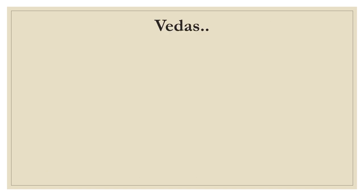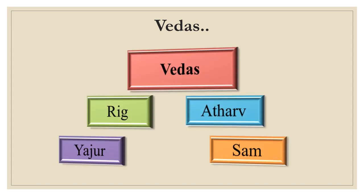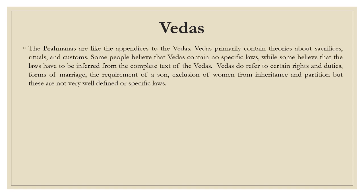There are four types of Vedas: the first one is Rik, second is Atharved, third is Yajurved and fourth is Samved. The Brahmanas are basically like an appendix of the Vedas. Vedas primarily contain theories about sacrifices, rituals and customs. Some people believe that Veda contain no specific laws, while some believe that the law has to be inferred from the complete text of the Veda.